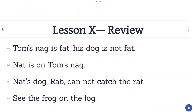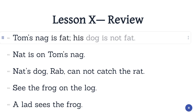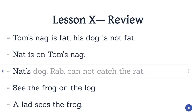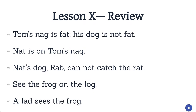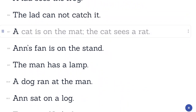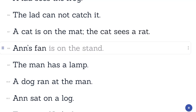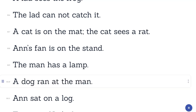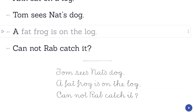Lesson 10. Review. Tom's nag is fat. His dog is not fat. Nat is on Tom's nag. Nat's dog, Rab, cannot catch the rat. See the frog on the log. A lad sees the frog. The lad cannot catch it. A cat is on the mat. The cat sees a rat. Ann's fan is on the stand. The man has a lamp. A dog ran at the man. Ann sat on a log. Tom sees Nat's dog. A fat frog is on the log. Can not Rab catch it?